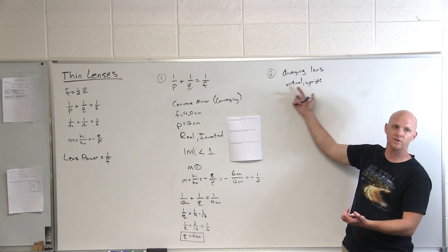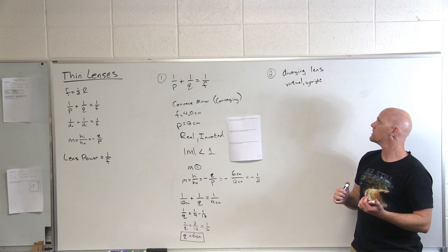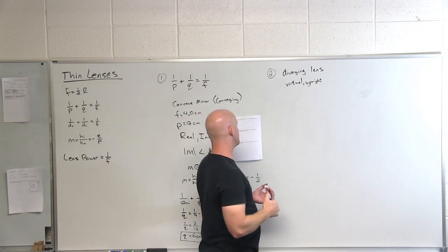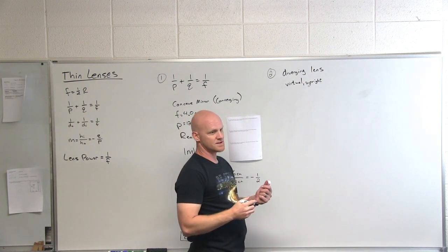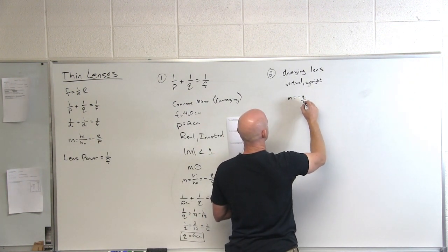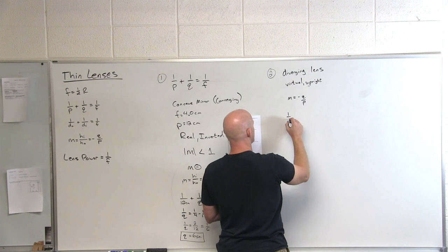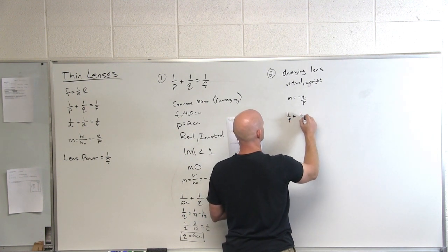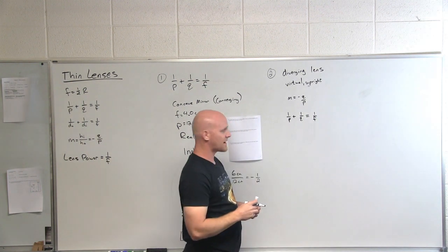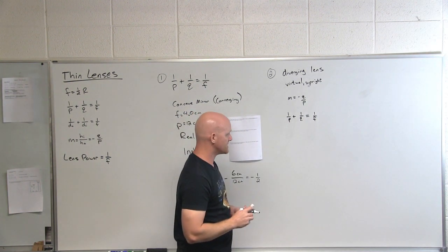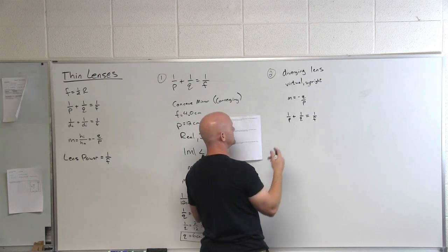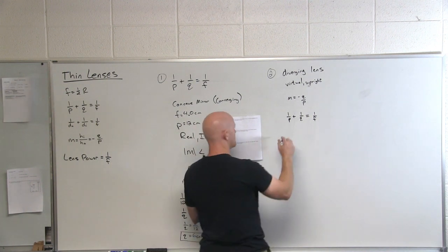You only get a virtual image, and if it's virtual, it's going to be upright. So we've already answered that — it's going to be virtual and upright. But we want to find the magnification of the image, using magnification equals negative Q over P, and the thin mirror and lens equation to find Q. The object is placed 12 centimeters from the lens.